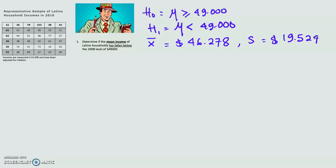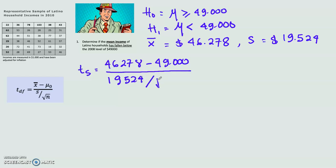With this information, we will use T statistic and calculate it using this formula. So the T statistic will be $46,278 minus $49,000 divided by $19,524 divided by the square root of N. The number of sample observations is 36. Using your calculator, you will get the result minus 0.836.